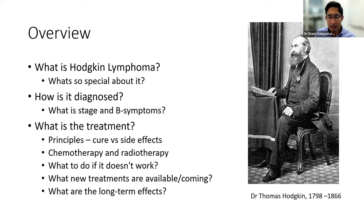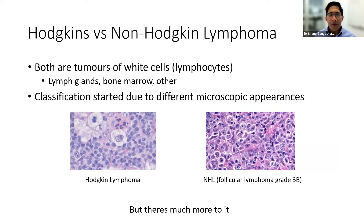This picture on the left is Thomas Hodgkin, a pathologist who lived a long time ago. Hodgkin lymphoma is named after him because of his work in pathology and the particular characteristics of what Hodgkin lymphoma looks like under the microscope. If you ask anyone — even medical students — what they know about lymphoma, they'll say there's Hodgkin's and non-Hodgkin's, and then it becomes unclear.